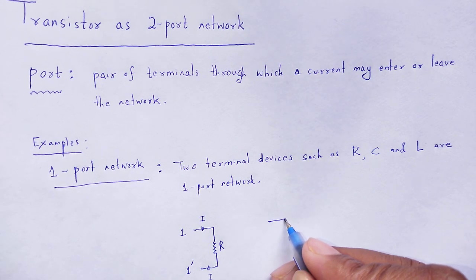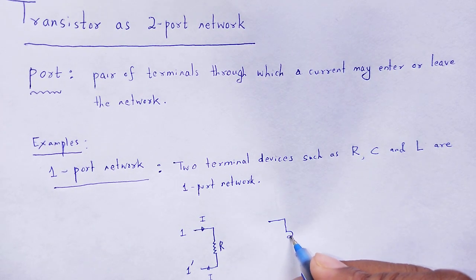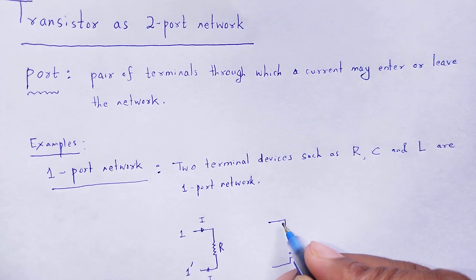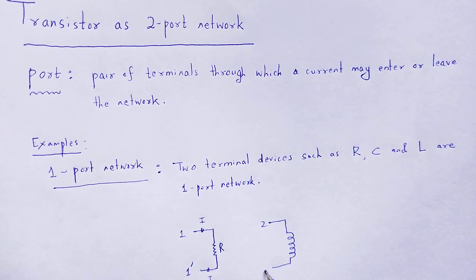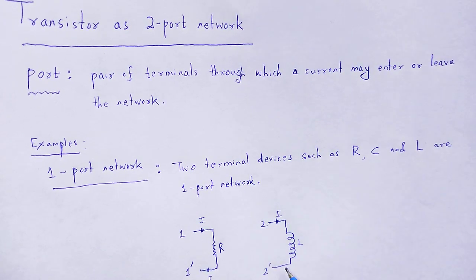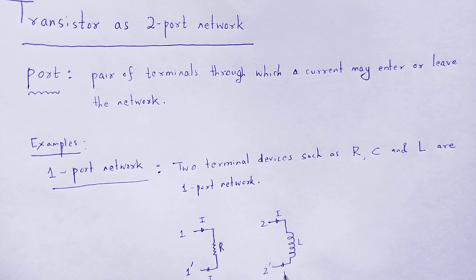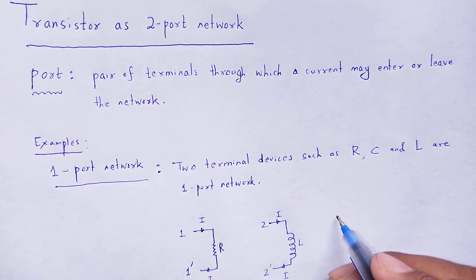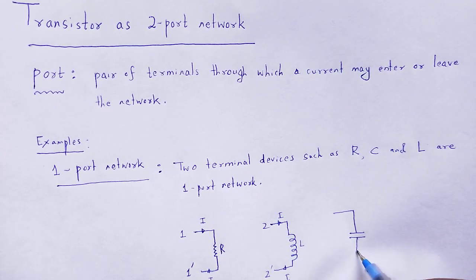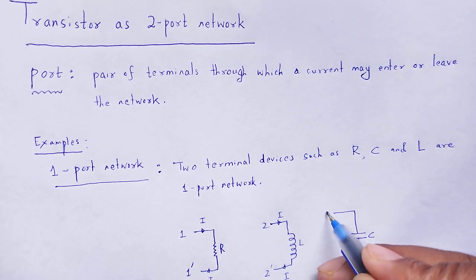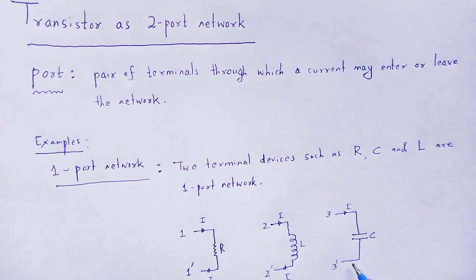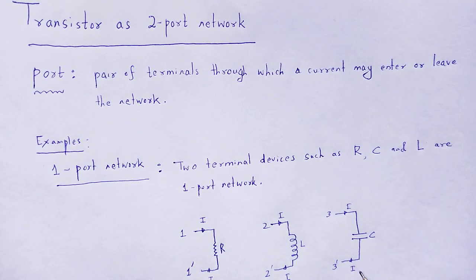Similarly, for an inductor, it has two terminals — let the terminals be labeled two and two-prime. Current is entering and current is leaving. This is also a one-port network.